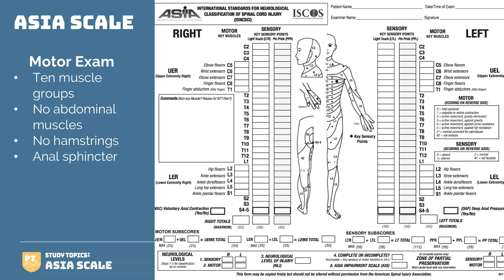I want to draw your attention to the muscle of the anal sphincter. It is innervated by S4 and S5 nerve roots and represents the end of the spinal cord. The anal sphincter is a critical part of the spinal cord injury examination. If the person has voluntary anal contraction, or VAC, regardless of any other finding, that person is by definition a motor incomplete injury, which is less severe than a complete injury.